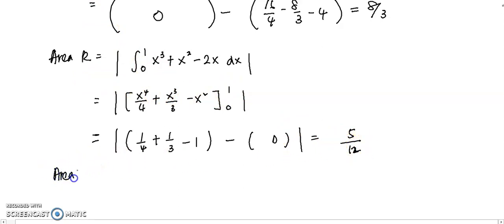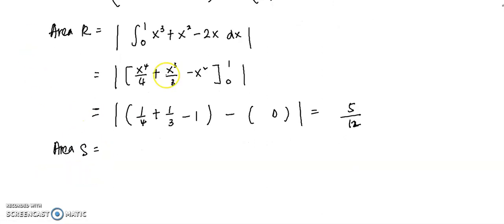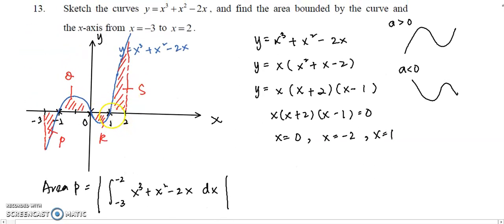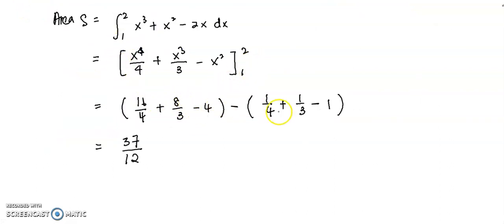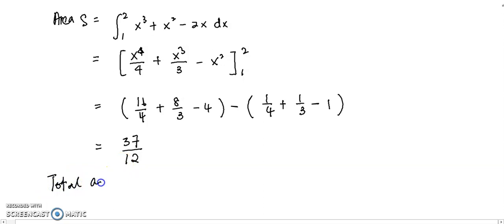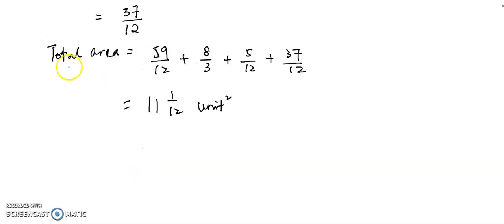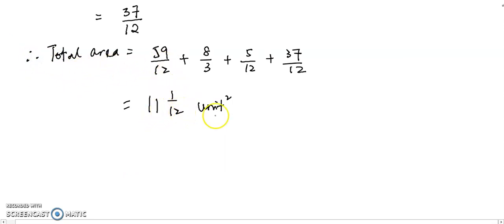For area S, we integrate from 1 to 2. Since it is above the x-axis, no modulus is needed. Substituting the limits, we get area S = 37/12. The total area is the sum of all four regions: P + Q + R + S = 59/12 + 8/3 + 5/12 + 37/12 = 11 and 1/12 square units. Thank you for watching, and I will discuss more questions in the next video.